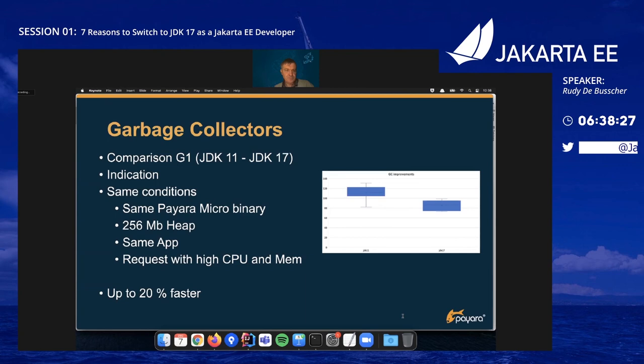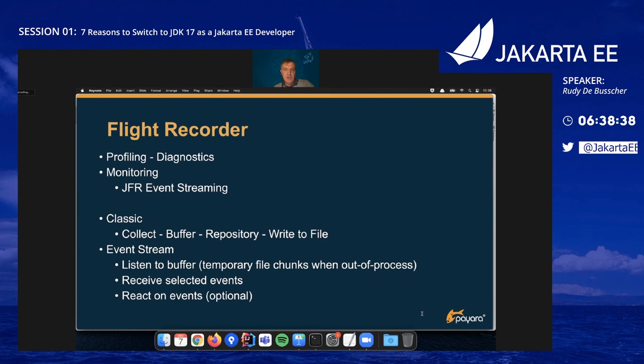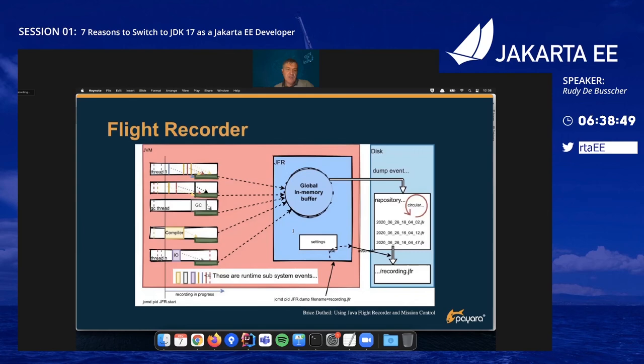Regarding Flight Recorder: normally you get a dump of Flight Recorder data for diagnostics, but now for monitoring purposes you can access the in-process global memory buffer to inspect all events through a listener, or attach to the on-disk repository from an out-of-process Java application started alongside your main application — retrieving all those events and doing whatever you like with them for monitoring purposes.